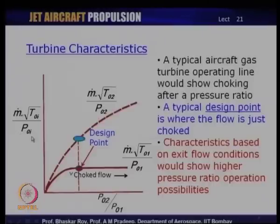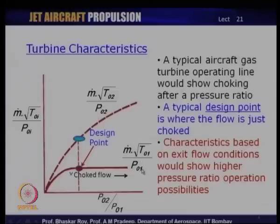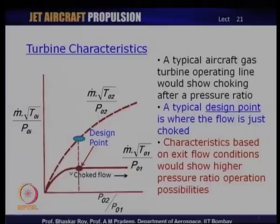Also notice that we are using a normalized mass flow parameter — not the mass flow directly, but normalized by the temperature and pressure at the entry to the turbine. The present map shows ṁ√T₀ᵢ / P₀ᵢ, drawn with two different sets of T₀ and P₀: one with reference to the entry of the axial flow turbine (T₀₁, P₀₁) and one with reference to the exit (T₀₂, P₀₂). We are using total temperature and total pressure to normalize this mass flow parameter.